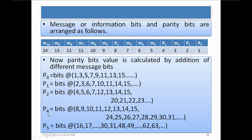For P3, we start from position 8 and add 8 bits, then skip 8 bits alternately. So positions 8 through 15 are added, then 16 through 23 are skipped, then 24 through 31 are added, and so on. Since the total number of bits in our code is only 14, we add from positions 8 to 14 only.